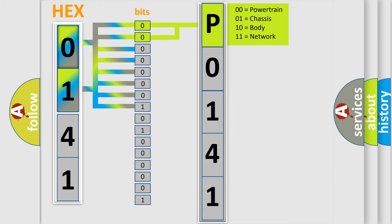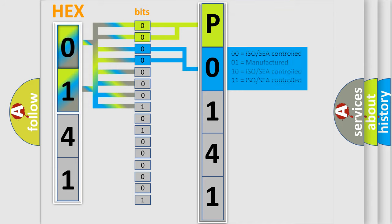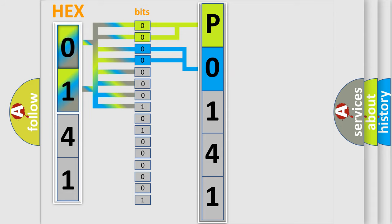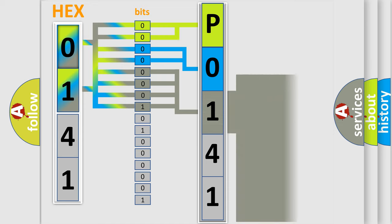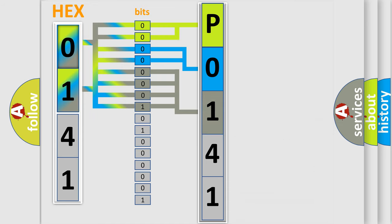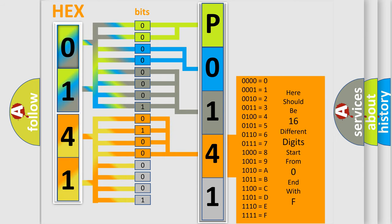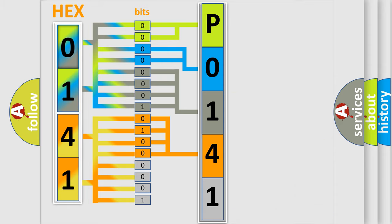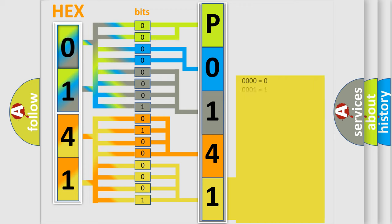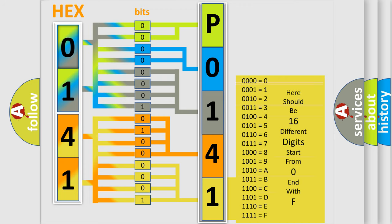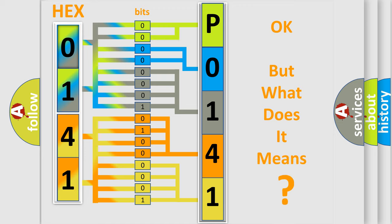By combining the first two bits, the basic character of the error code is expressed. The next two bits determine the second character. The last bits of the first byte define the third character of the code. The second byte is composed of a combination of eight bits. The first four bits determine the fourth character, and the last four bits define the fifth character. A single byte conceals 256 possible combinations. We now know how the diagnostic tool translates the received information into a more comprehensible format.